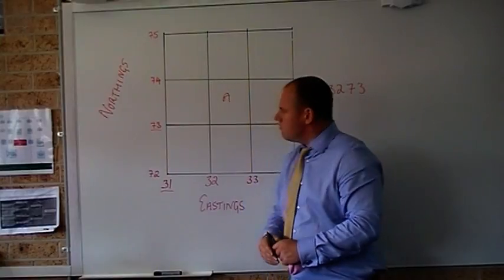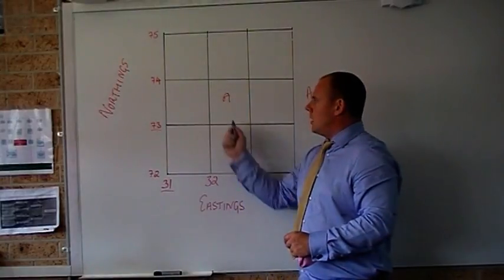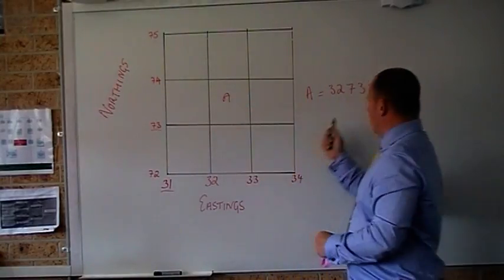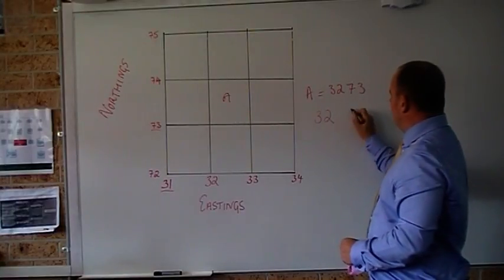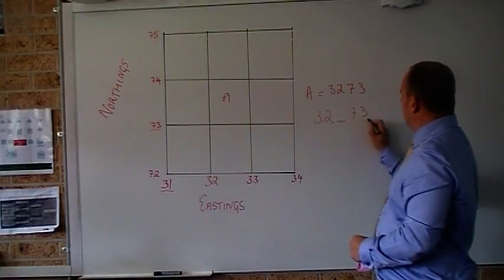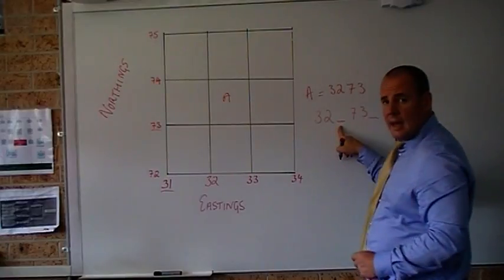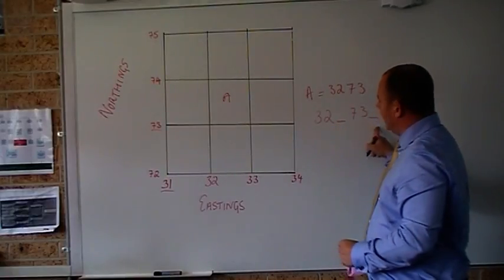How do I do that? Well, quite easy. I always start off giving the area reference which we've done. But what we're going to do, we're going to leave a little gap. And I'm going to add an extra easting here and an extra northing there.